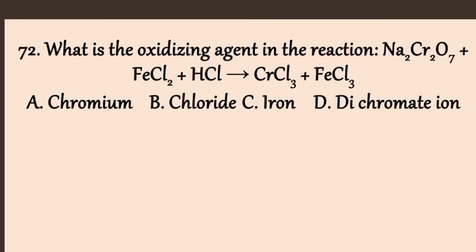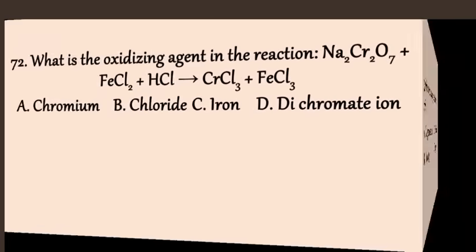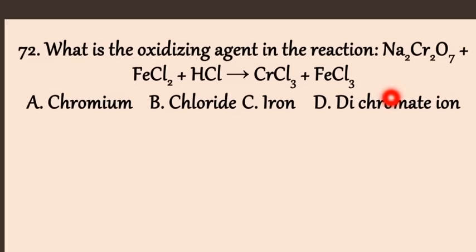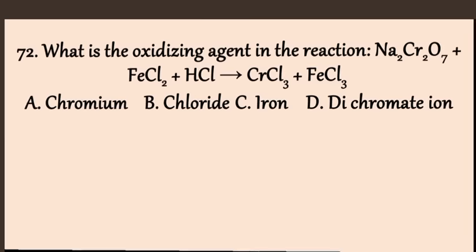Question 72: What is the oxidizing agent in the reaction: sodium dichromate + iron(II) chloride + hydrochloric acid → chromium trichloride + iron(III) chloride? Iron is oxidized from +2 to +3, so it is the reducing agent. Chromium in dichromate Cr₂O₇²⁻ changes from +6 to +3, so dichromate is reduced — it is the oxidizing agent. The answer is D, dichromate ion.